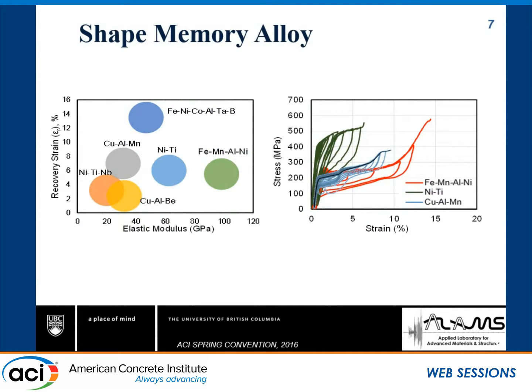When we talk about shape memory alloy, different types of alloys are available. The most popular is nickel-titanium, almost equiatomic nickel and titanium. Since both nickel and titanium are expensive metals, nickel-titanium is very costly. There are also copper-based alloys such as copper-aluminum-manganese and copper-aluminum-beryllium — copper is cheap so those are cheaper. Recently in Japan, iron-based shape memory alloys have been developed, which are much cheaper compared to nickel-titanium. Most of the work done to date is on nickel-titanium, with only a few works on copper-based and iron-based alloys.